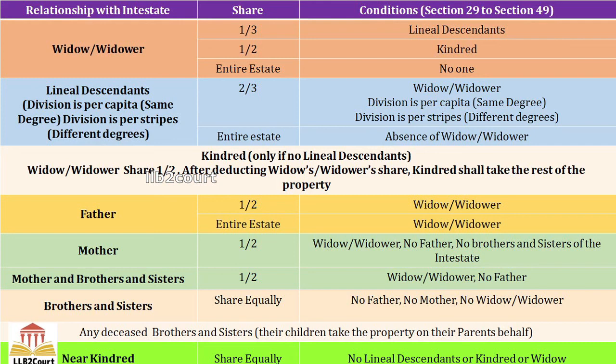I have created all those provisions in a single table so that you can easily understand. The first person who gets the property is widow or widower. The rules for the widow and widower are the same — their share will be 1/3 if lineal descendants are there, or 1/2 if kindreds are there. If no one is there, the entire estate will be shared by the widow or widower.